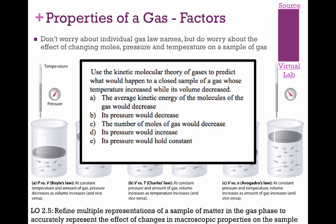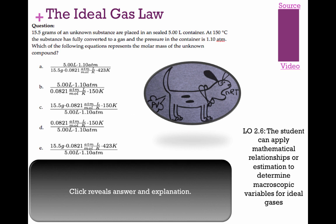The question asks: use kinetic molecular theory to predict what happens to a closed sample of gas whose temperature increased while its volume decreased. Closed sample means gas can't escape, so moles can't change. Average kinetic energy is based on temperature — temperature goes up, kinetic energy goes up. Decreasing the volume compacts the gas molecules closer together, so along with increased temperature, pressure increases significantly.